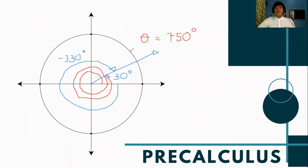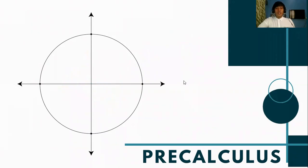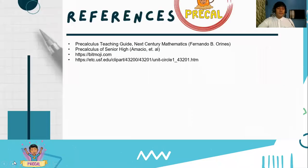Angles in a unit circle can exceed 360 degrees or negative 360 degrees. You can always continue rotating to complete revolutions until you reach the angle between 0 to 360 degrees, and also the angle between negative 360 degrees to 0 degrees. That is how to get the coterminal angles of a given reference angle. Convert both to radian measure using pi over 180.